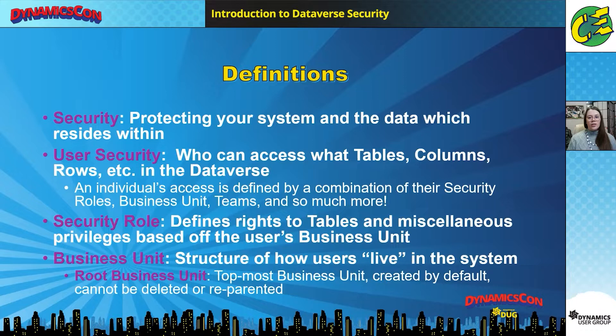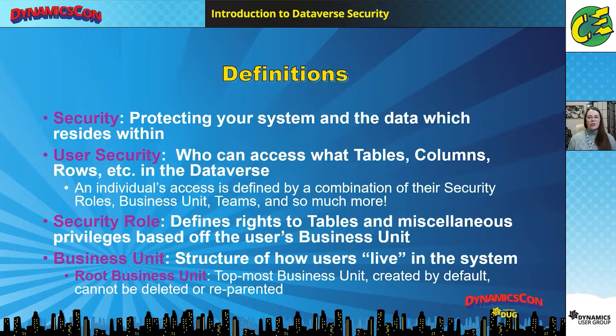A security role defines the rights a user has to a specific table and any miscellaneous privileges, and those are based on the business unit of the user as well as the business unit of whoever owns that record. When I configure my users, they have their business unit assigned, teams assigned, and roles assigned. Business units form a hierarchy and determine where a user resides in the system. I'm also trying to use the new terminology — tables, columns, and rows — rather than the old terms entities, fields, and records.